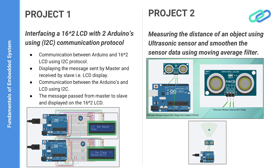In the next project, using the same simulator, students will implement a moving average filter for smoothing data coming from an ultrasonic sensor. This ultrasonic sensor helps figure out obstacles and the distance between the obstacle and the sensor. The algorithm implements a digital filter to demonstrate how to reduce noise coming from the sensor readings.